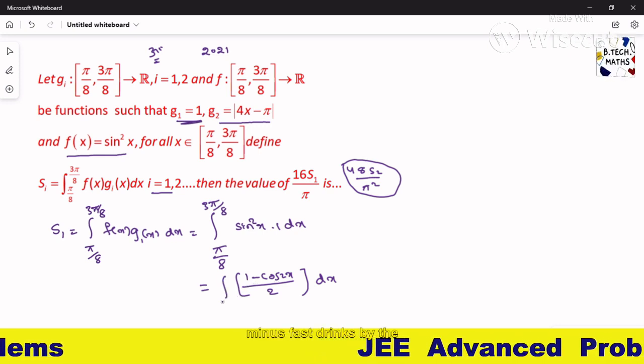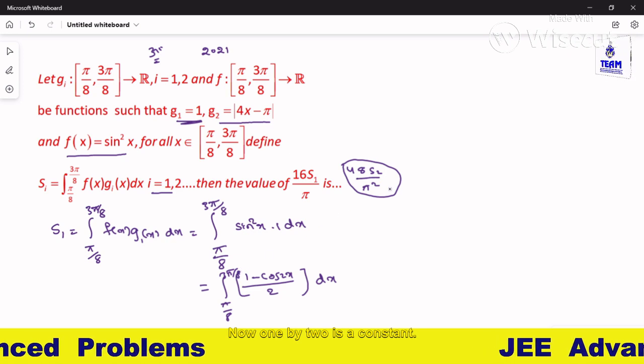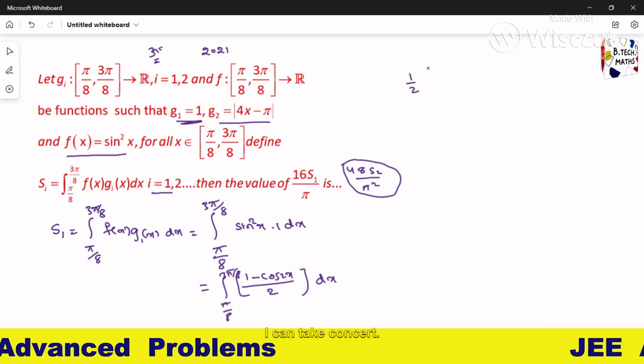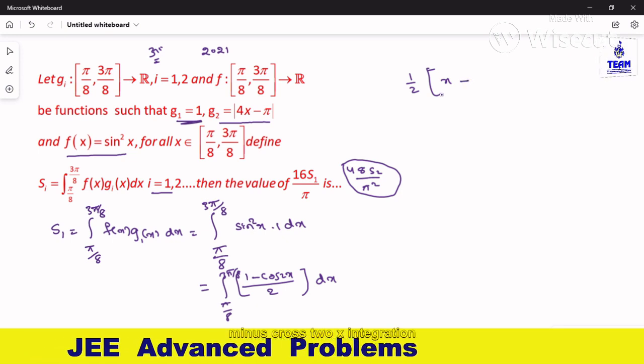Now we have converted sine squared x as 1 minus cos 2x by 2, limits are π/8 to 3π/8. Now 1 by 2 is a constant, take it outside. The integral of 1 is x minus cos 2x integration is sin 2x divided by 2.